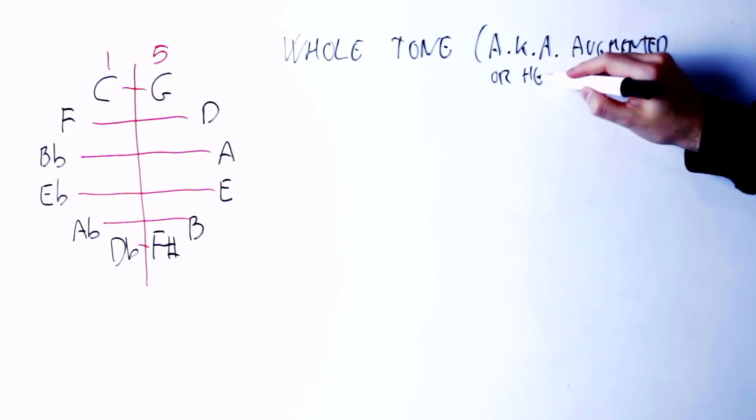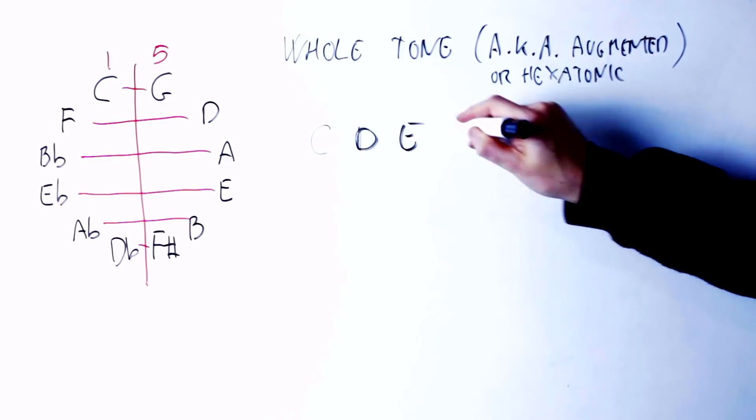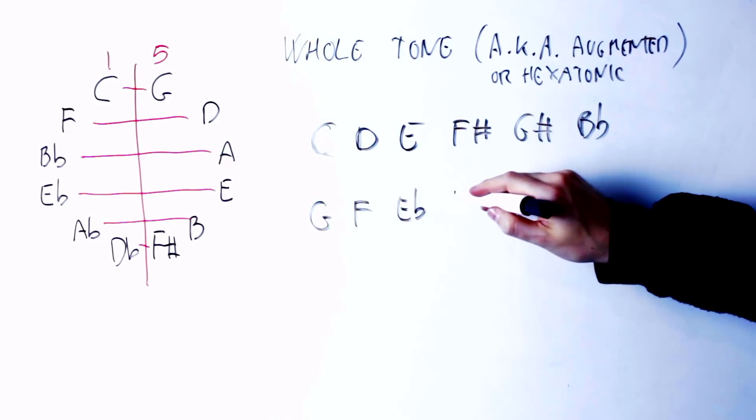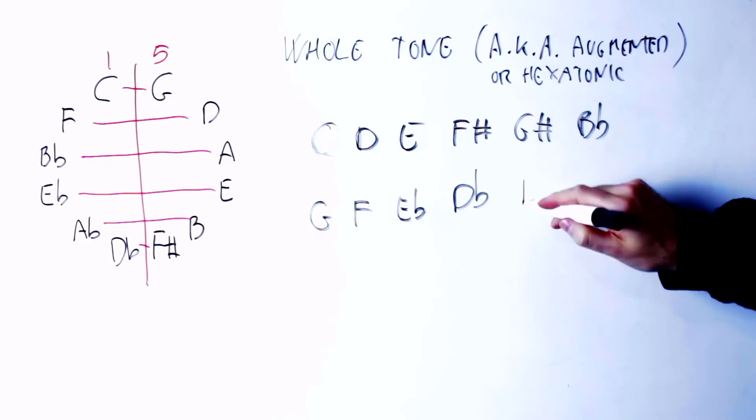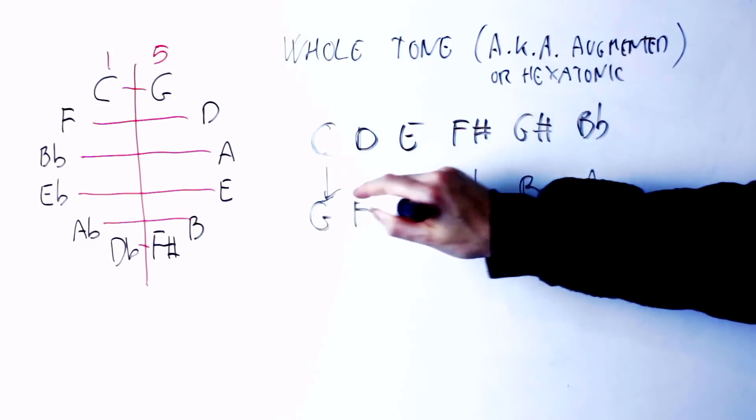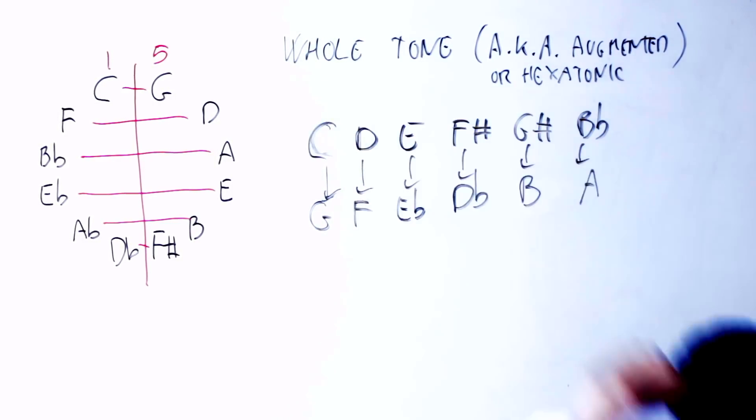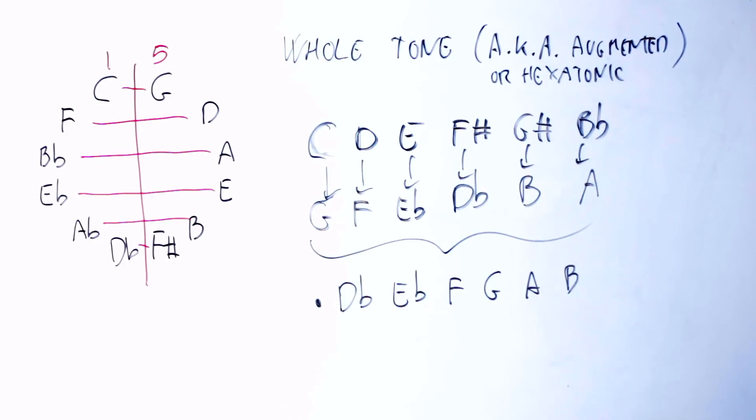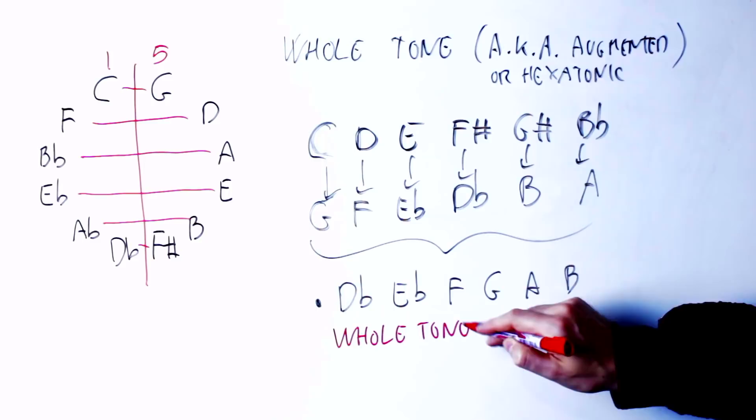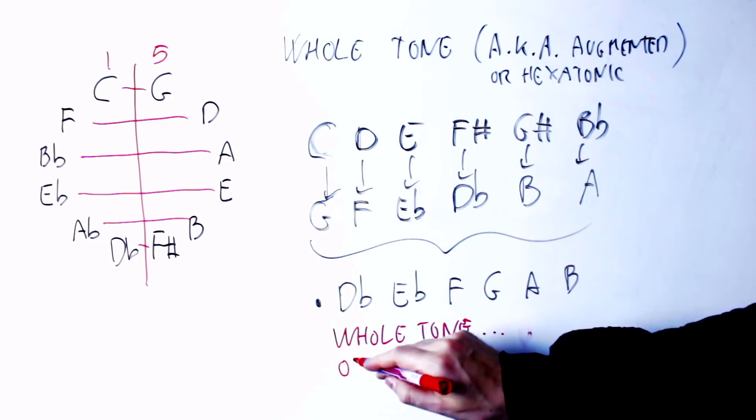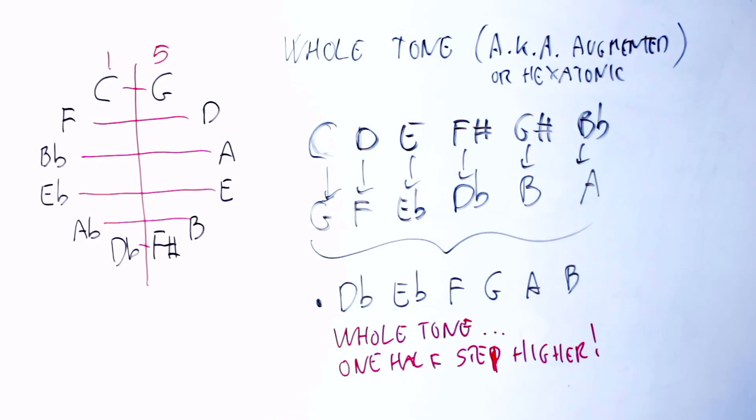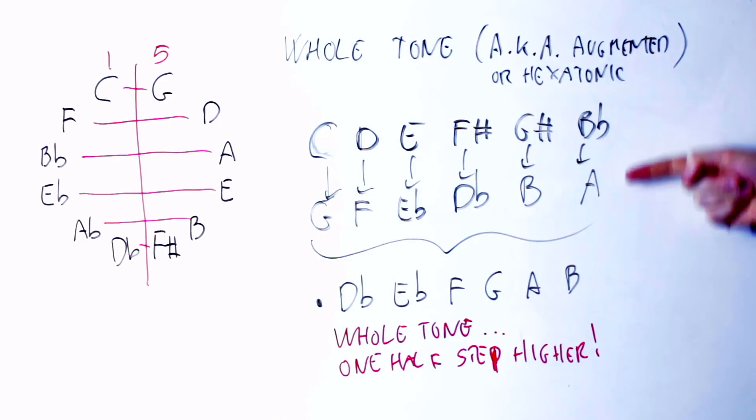Another interesting scale to look at is the hexatonic scale, C, D, E, F sharp, G sharp, B flat. If I flip this scale around using negative harmony, C becomes G, D becomes F, E becomes E flat, F sharp becomes D flat, G sharp becomes B, and B flat becomes A. What I get is a new scale that does not have the same root as before, because the node C is not in this new scale, and this is because we didn't have a perfect fifth in the original scale, but this new scale is the other hexatonic scale, meaning the hexatonic scale that does not start on C but starts on D flat.